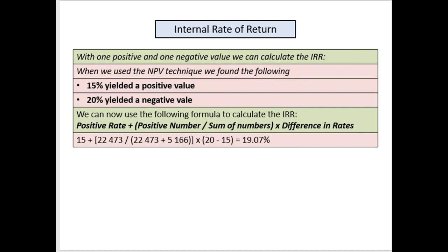Now we calculate the internal rate of return. I want to note this is an assignment question — I've not seen it in a test or exam — so they expect you to do this only as part of the assignment. With one positive and one negative NPV value, we can calculate the IRR. Using the net present value technique, 15% yielded a positive value and 20% yielded a negative value.